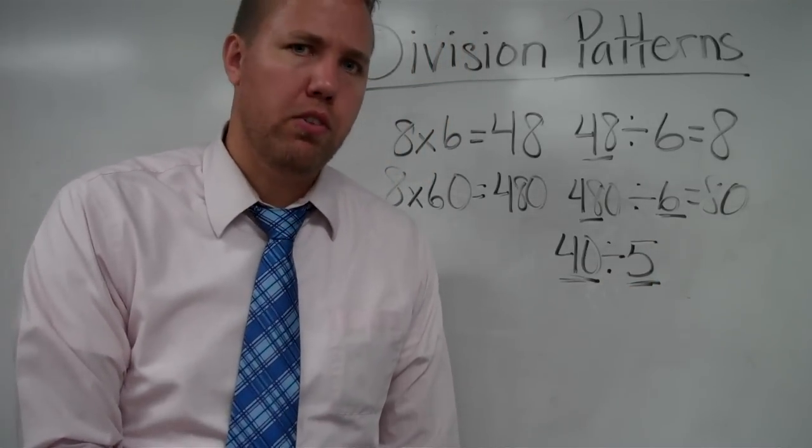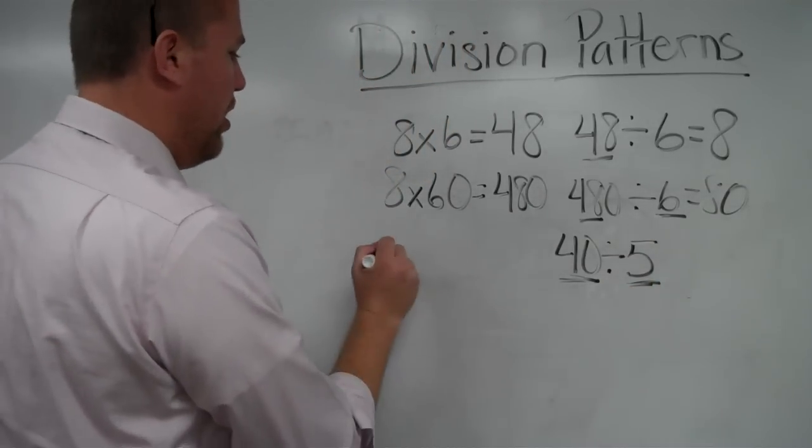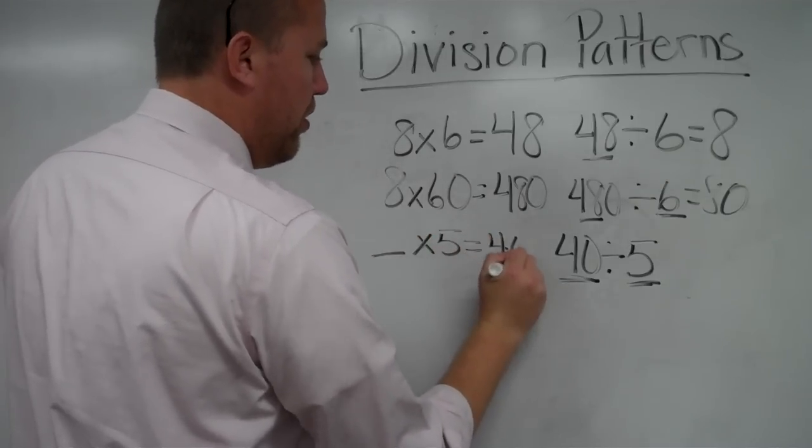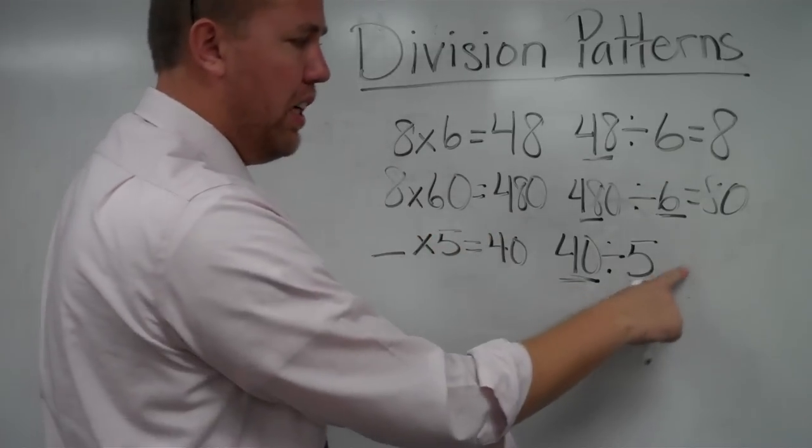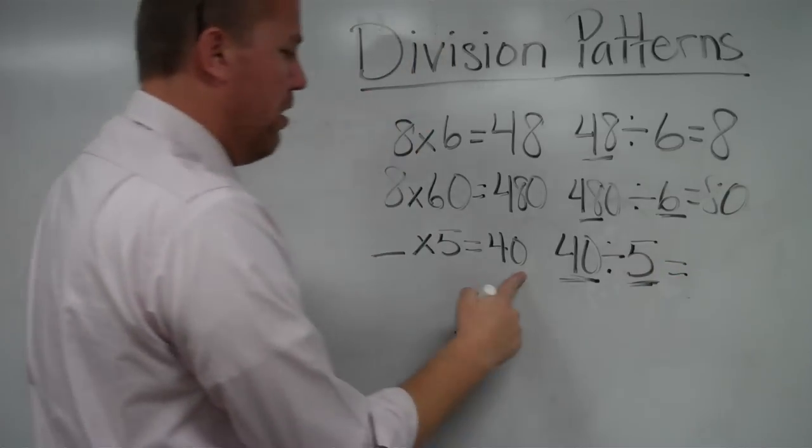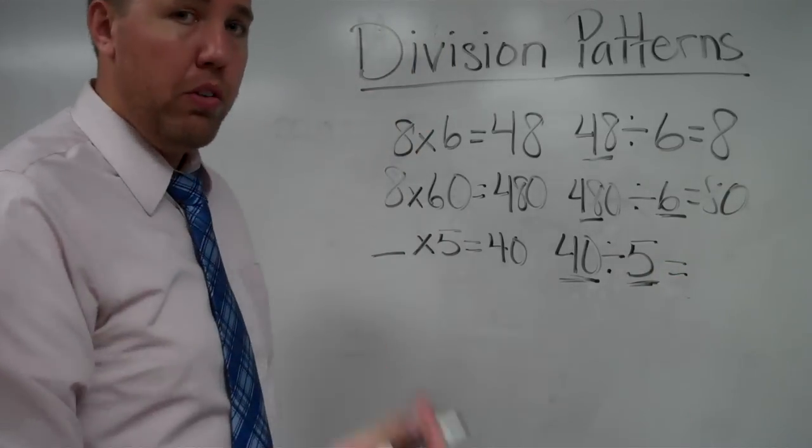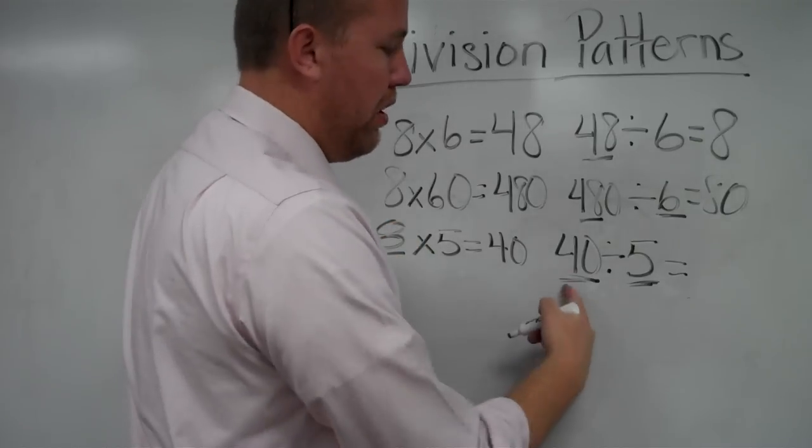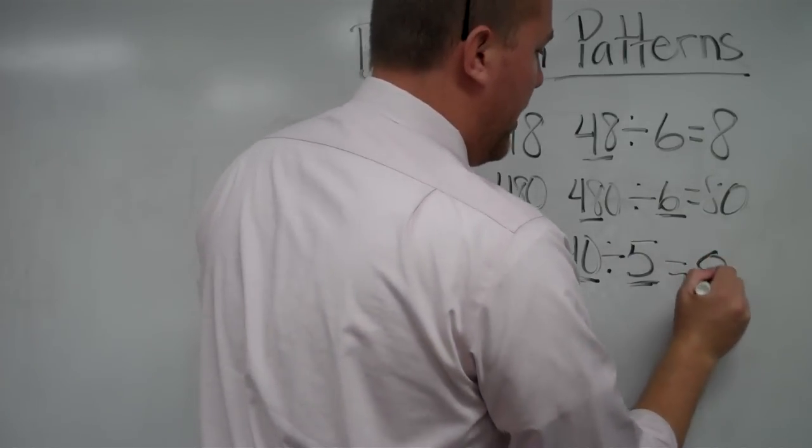I don't know how to do 40 divided by 5, so I could look at blank times 5 equals 40. 40 divided by 5 equals something. Blank times 5 equals 40. And I'm thinking, if 8 times 5 equals 40, then 40 divided by 5 equals 8.